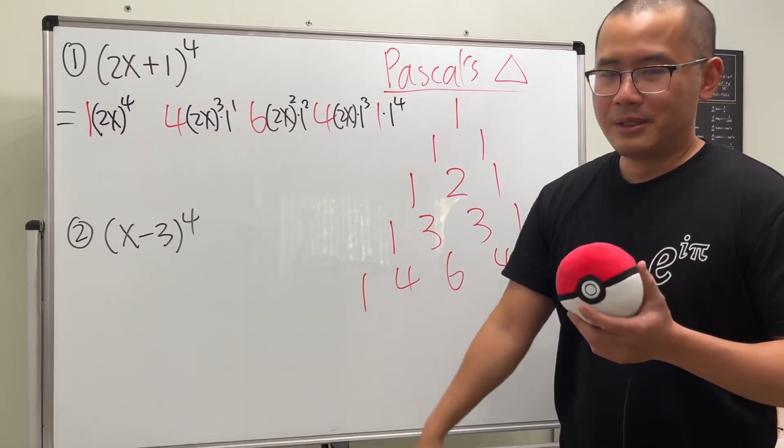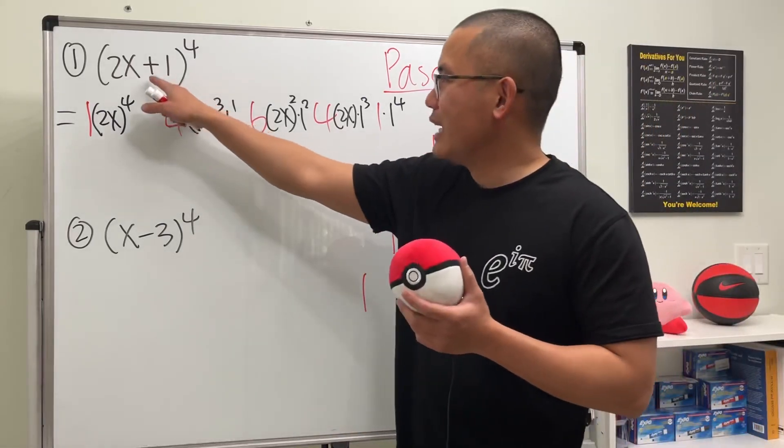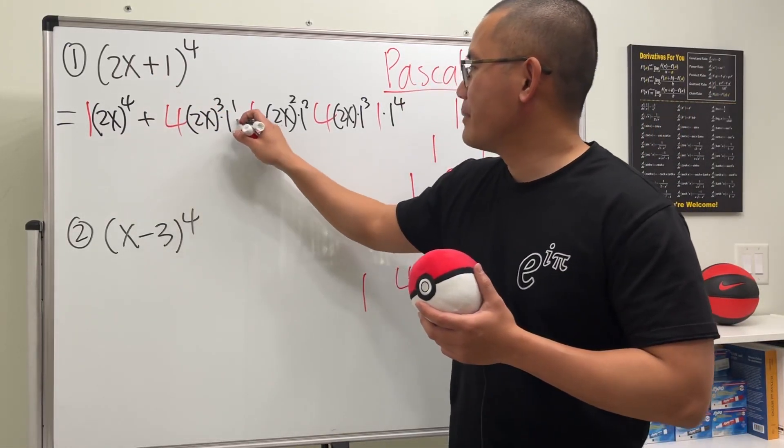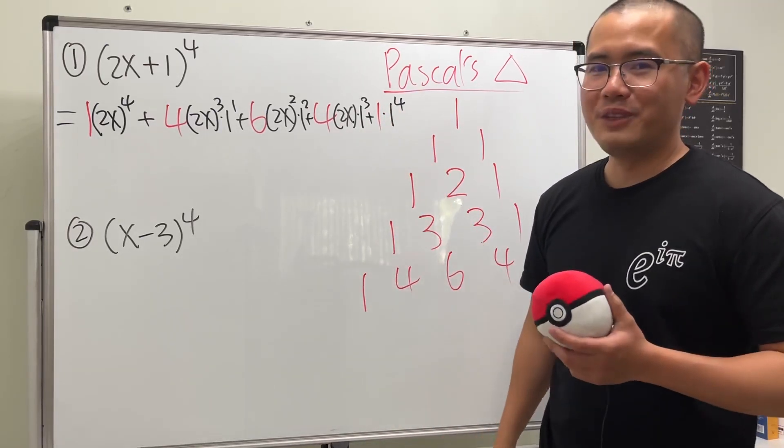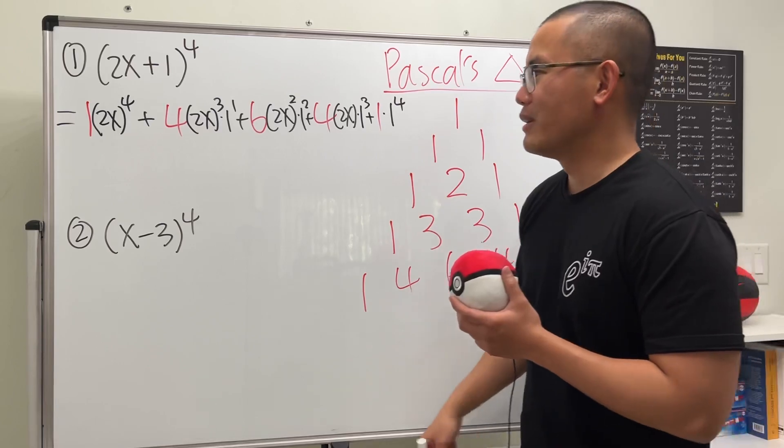So this right here are the terms. And because we have a sum, we are just going to add up everybody. So that's pretty much the construction of the answer. And now we just have to work them out individually.